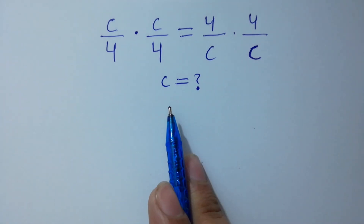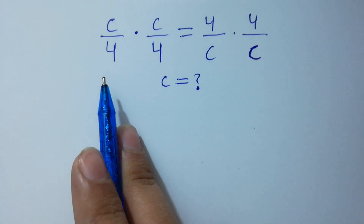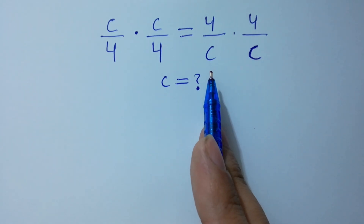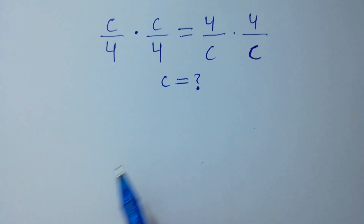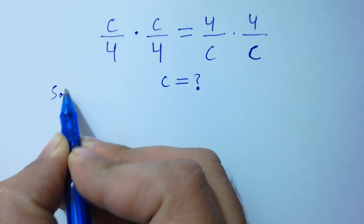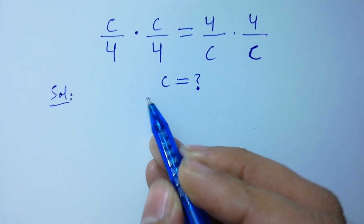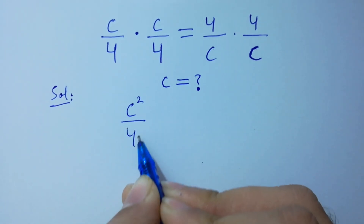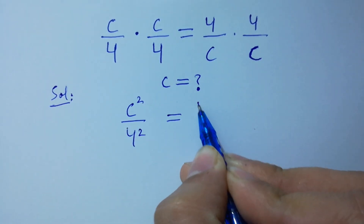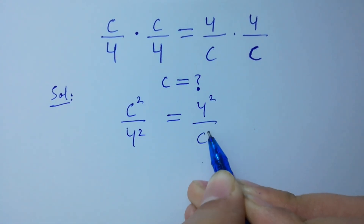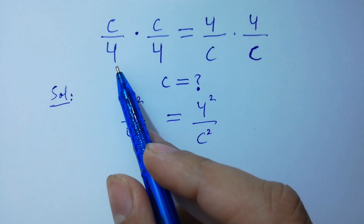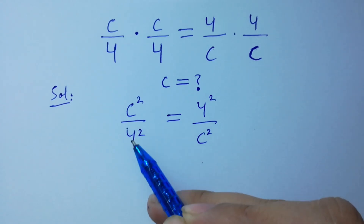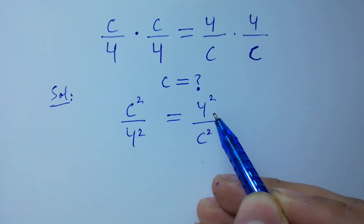Hello friends. Find the value of c if (c/4) times (c/4) equals (4/c) times (4/c). Let's have a solution. This is the same as c squared over 4 squared equal to 4 squared over c squared, because both have power 1. That's why you can write c squared over 4 squared equal to 4 squared over c squared.